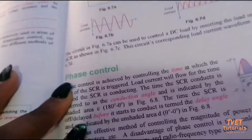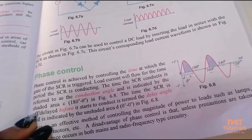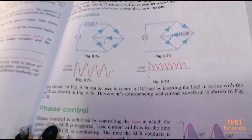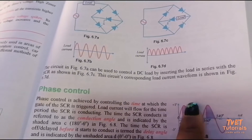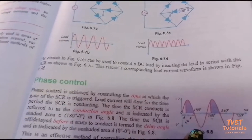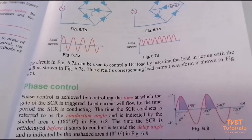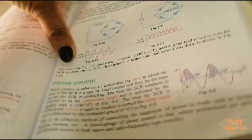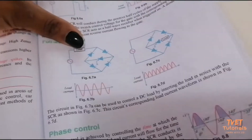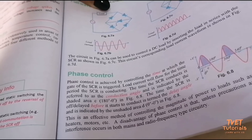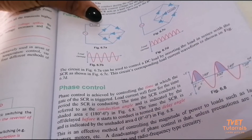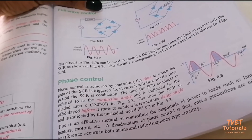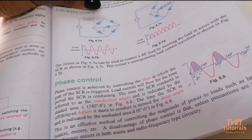For phase control, they use a timer to control the SCR. The shaded area represents conduction and the unshaded area represents off delay. Off delay means the timer is off, and on delay means the timer is on. They use a timer to switch the SCR on and off.